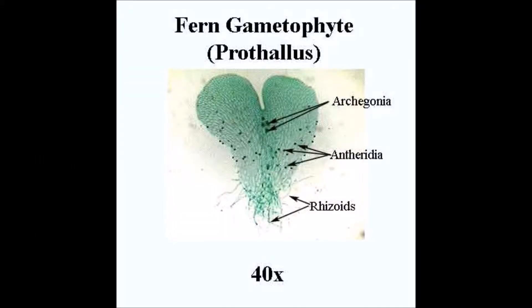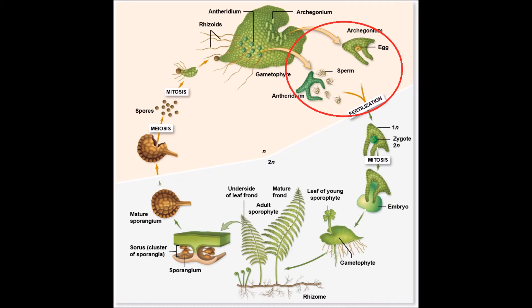On this gametophyte generation are antheridium and archegonium reproductive structures. When mature, the antheridium will release haploid sperm cells, which will fertilize the haploid eggs found in the archegonium.